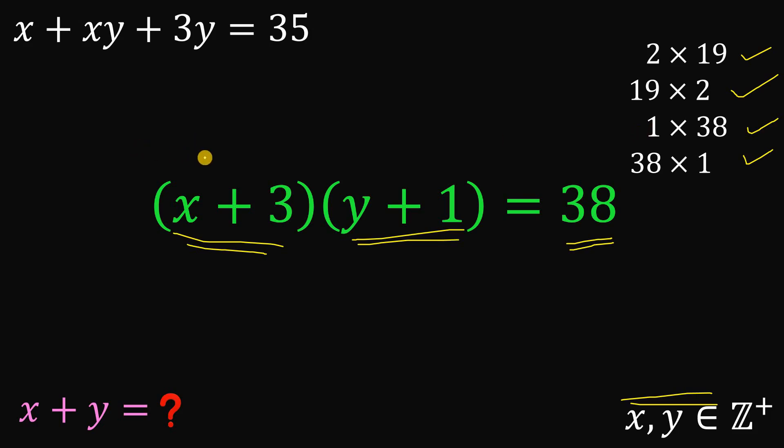Now, if we accept 1 times 38, or we can say that x plus 3 equals 1, then definitely, if we solve for the value of x, x equals negative 2, which is not possible because we know x and y are positive integers.